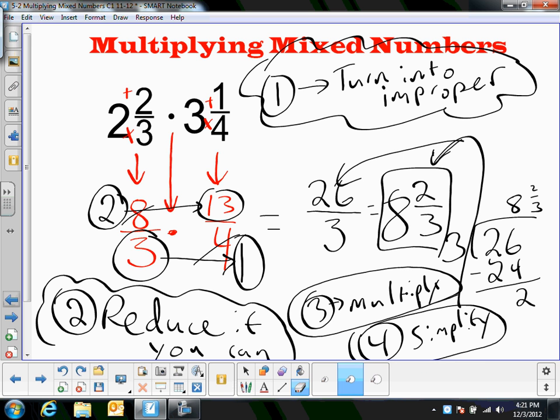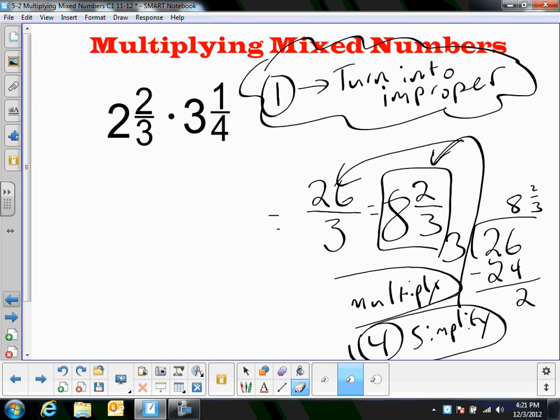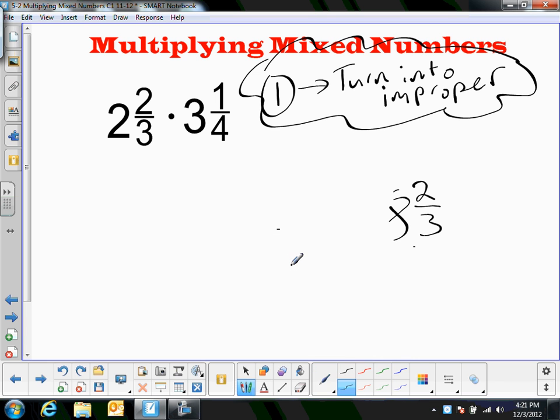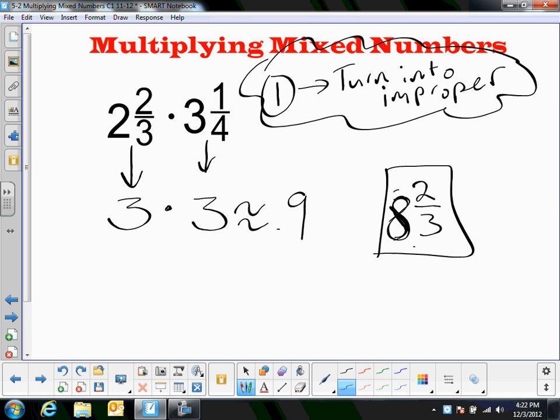But, one quick way to check yourself is to estimate. So, let me show you how to do that. My answer was 8 and 2 thirds. I can estimate. You take your 2 and 2 thirds, you round it to the nearest whole number. Is 2 and 2 thirds closer to 2 or 3? It's closer to 3. Times, 3 and 1 fourth. Is that closer to 3 or closer to 4? It's about 3. So, the answer should be something around 9. And, you can see that my answer was 8 and 2 thirds. So, I estimated and it was close to my answer. So, I must have done something right.